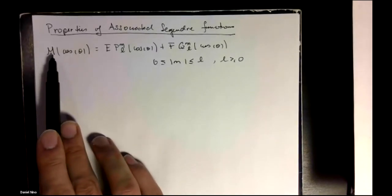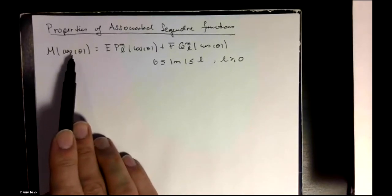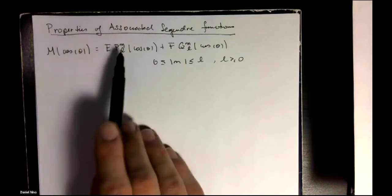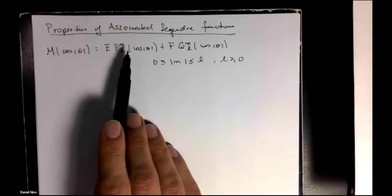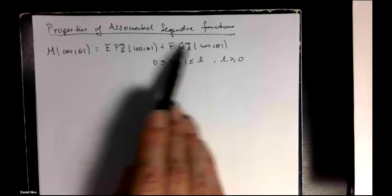So we have defined this factor M(cosine theta), or M(mu), as a superposition of what we call the associated Legendre functions.